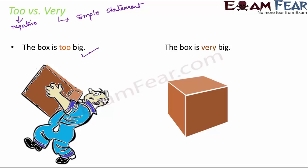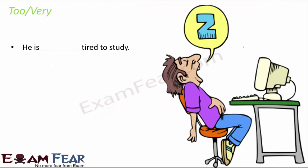Now when we use very, we say the box is very big, so it is just a simple statement. When I say the box is very big, that's it. Now that doesn't mean that it is heavy to carry or it is causing me trouble - it has no negative implication attached. It just means that it is a simple statement. So that's the main difference between too and very. Let us take one more example: he is dash tired to study.